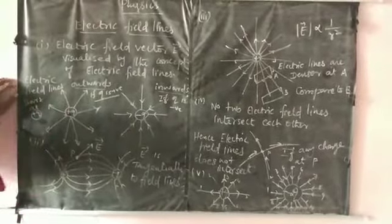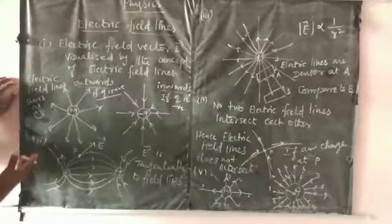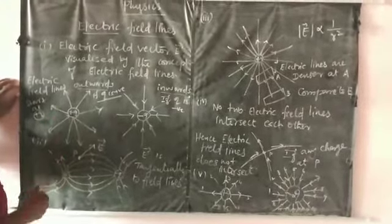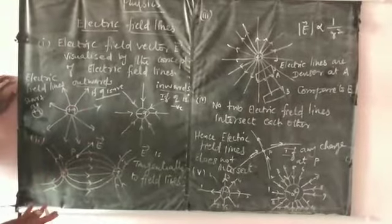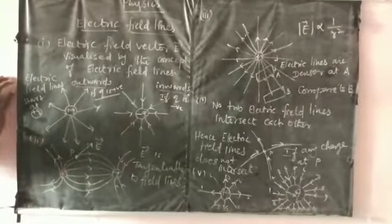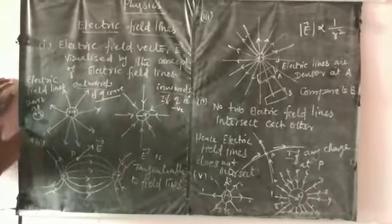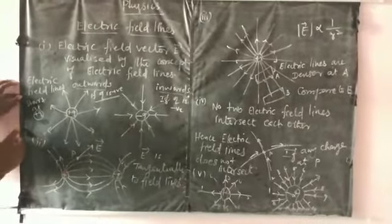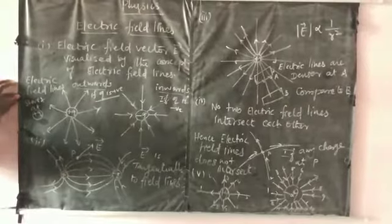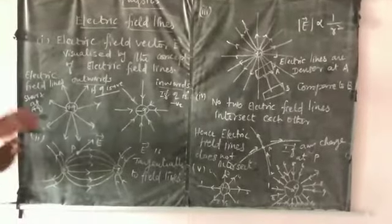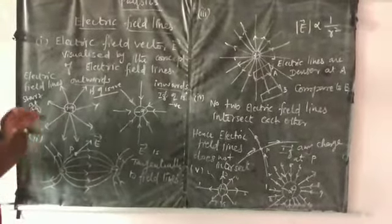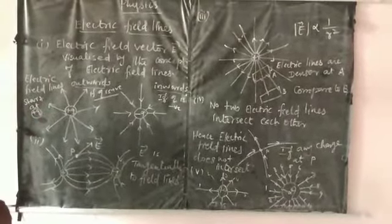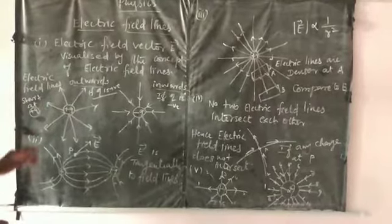Any one of the electric charges, positive or negative, creates an electric field. Electric field lines represent the electric field vector. So, electric field vectors are visualized by the concept of electric field lines.